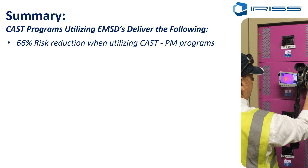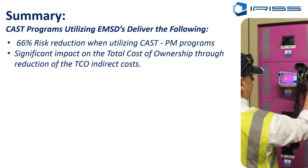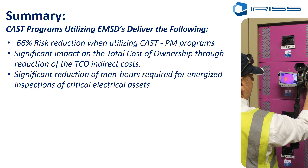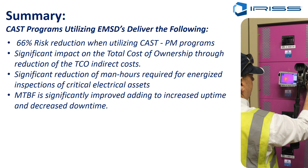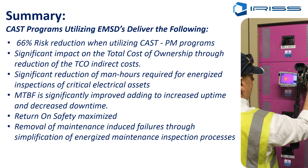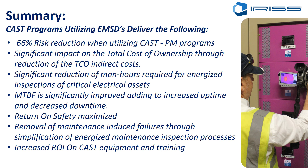To summarize, CAST programs utilizing EMSDs can deliver the following: a 66% reduction in risk when utilizing CAST and planned maintenance programs versus run-to-failure; a significant impact on total cost of ownership through reduction of indirect costs; a significant reduction of man-hours required for energized inspections of critical electrical assets; significantly improved mean time between failure, adding to increased equipment uptime and decreased downtime; maximized return on safety; removal of maintenance-induced failures through simplification of energized maintenance inspection processes; and an increased ROI on your critical asset surveillance technology equipment — IR cameras, ultrasound equipment, partial discharge equipment, and the associated training, because personnel will use it far more.